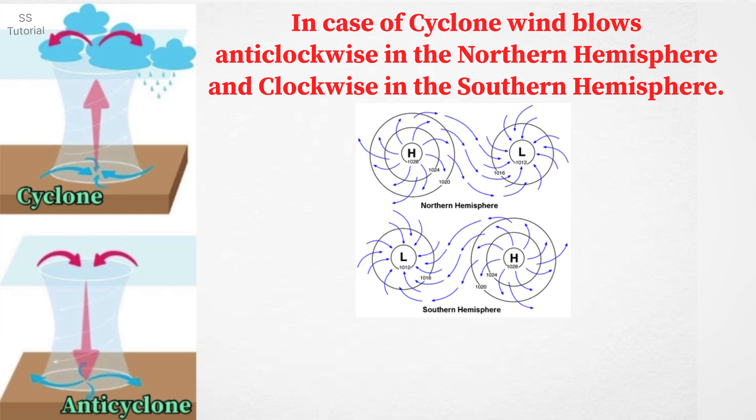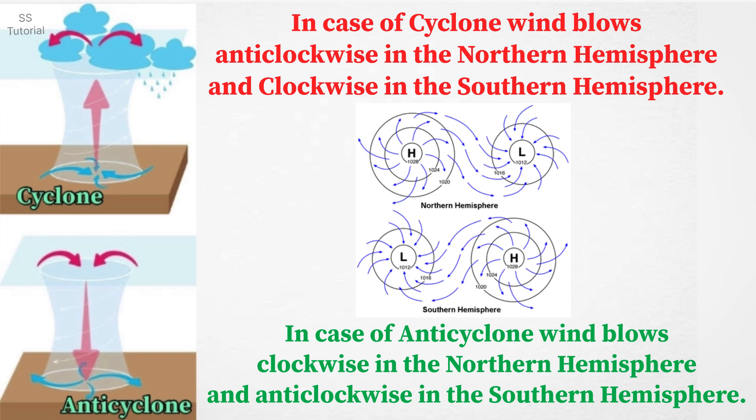In case of cyclone, wind blows anti-clockwise in the Northern Hemisphere and clockwise in the Southern Hemisphere. But in case of anticyclone, wind blows clockwise in the Northern Hemisphere and anticlockwise in the Southern Hemisphere.